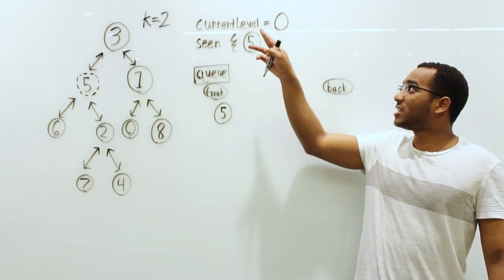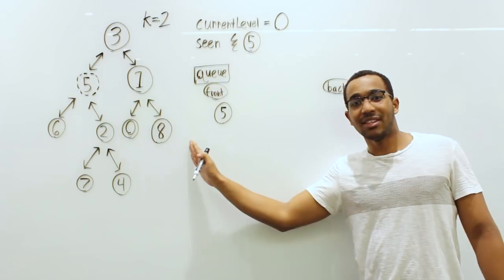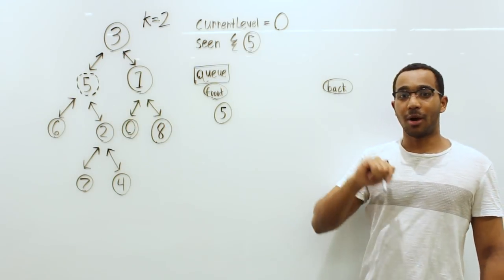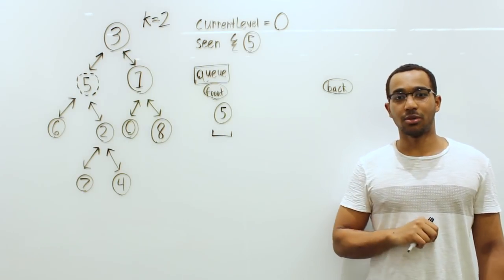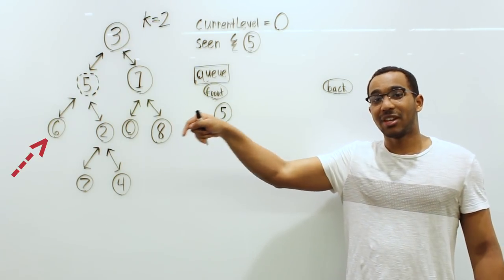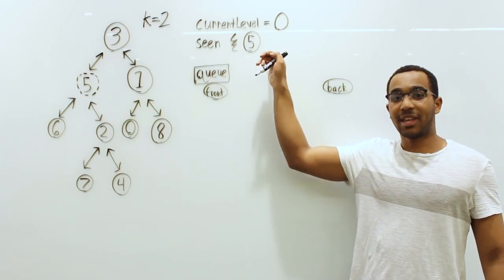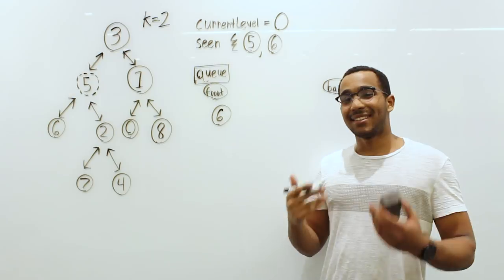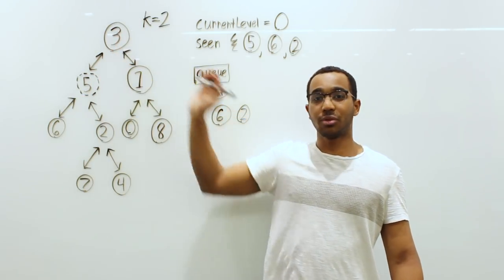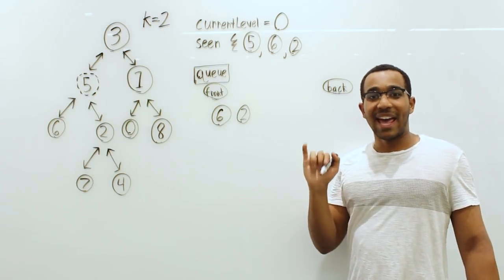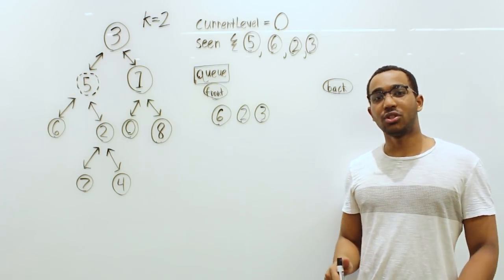We first need to see: is this the level I want? I want level two; I'm on level zero. If we wanted level zero, this is what we'd return — just the start node. But we need to keep going. We see the size of this layer and iterate over that many nodes. We pull five from the queue and add its left, right, and parent. Six has not been seen — add it. Two has not been seen — add it. The parent of five is three; three has not been seen — add it. We have processed the first layer and increment to layer one.